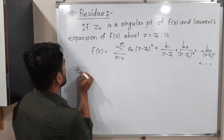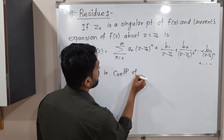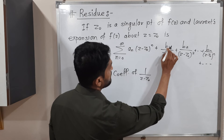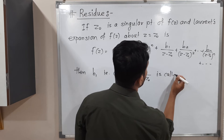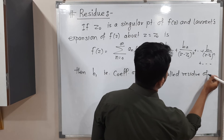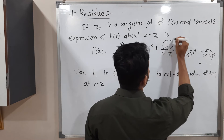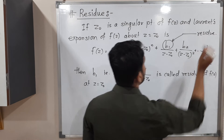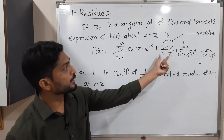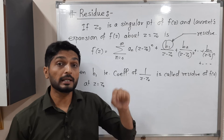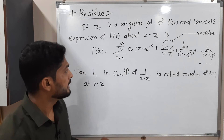Then b1 — the coefficient of 1 over (z minus z naught) — is called the residue. So this b1 is what we call the residue. When you want to find the residue, you find the Laurent series expansion and search for the term 1 over (z minus z naught); its coefficient — which can be any constant — is the residue.